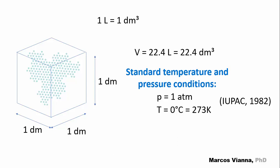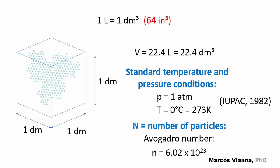Under these conditions, the number of particles, say molecules, of the vapor or gas, contained in a 22.4 liter container is the Avogadro number. So, our 1 liter container will contain 3 times 10 to 22 particles.